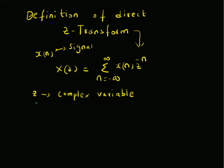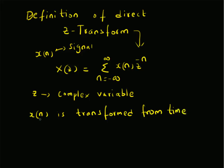This Z-transform X(z) transforms the time domain signal x(n) into a complex plane representation. That is, the signal x(n), which is in the time domain where n is a discrete time variable, is transformed from the time domain to the complex plane representation, that is the variable z — the z domain.